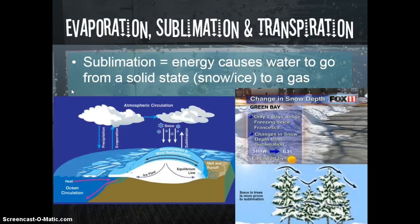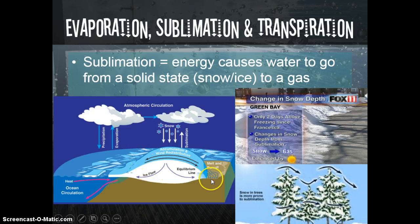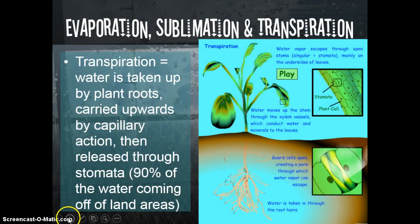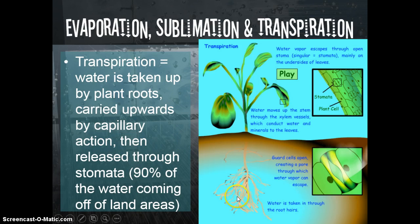Whereas evaporation is turning from a liquid to a gas, sublimation is going from a solid to a gas. This happens more at the poles where water is tied up as snow or ice — you still get snowfall and rainfall there because the water is subliming instead of evaporating. Then we have transpiration, which often gets ignored but is actually one of the most important ways water gets transferred back to the atmosphere. Transpiration is when water moves up and evaporates from the leaves of plants — it gets taken up by the plant roots and travels upward through the xylem by capillary action.